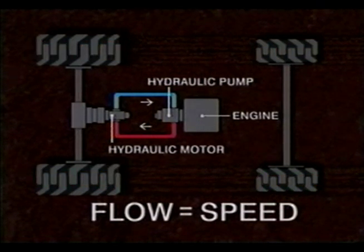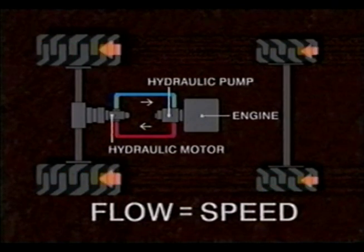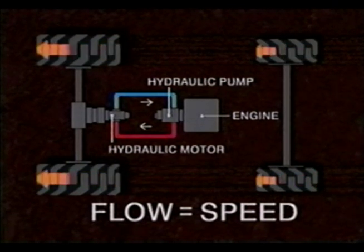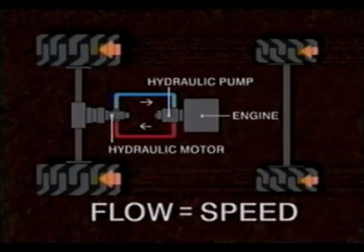This variable displacement pump provides flow to the motor in order to control the speed of the motor. In fact, the variable displacement pump provides infinitely variable speed within the range allowed by your transmission gear. It also determines the direction of the vehicle, forward or reverse.